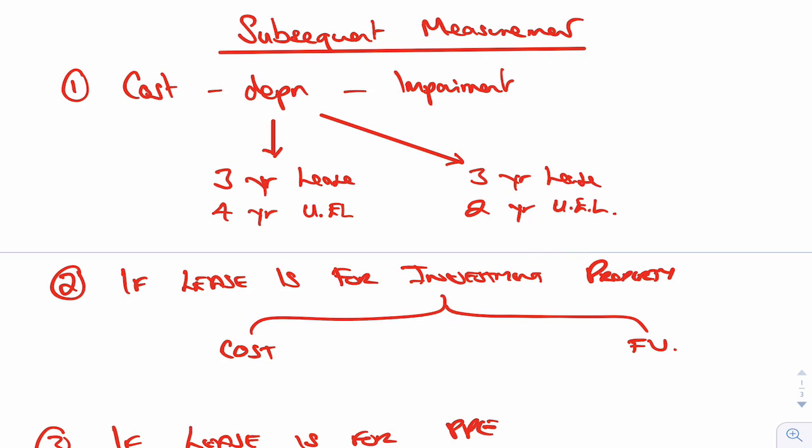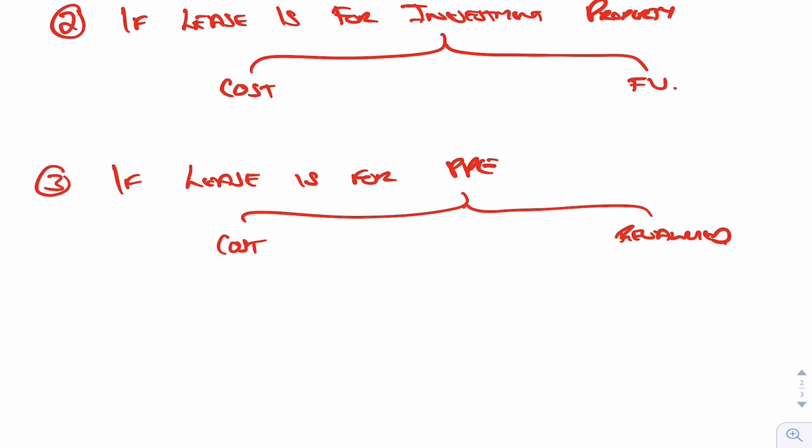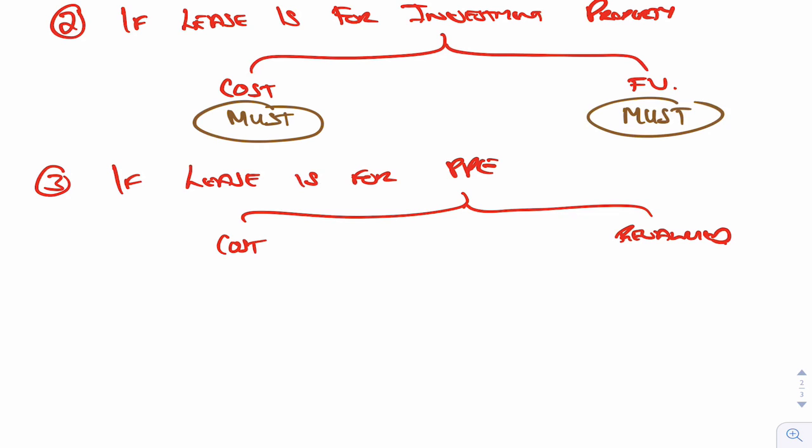Now, what if the lease is for investment property? If you remember, for investment property you have a choice — you can either use the cost model or the fair value model. So if your policy for investment property is the cost model and you lease an investment property, then in that case you must use the cost model. If however your policy for investment property is the fair value model and you lease an investment property, then you must also use the fair value model for the lease.